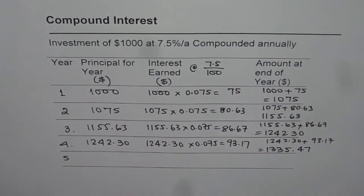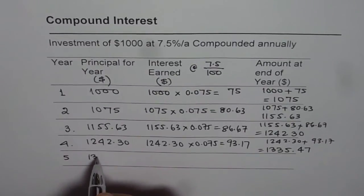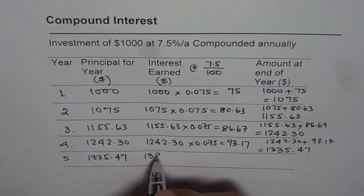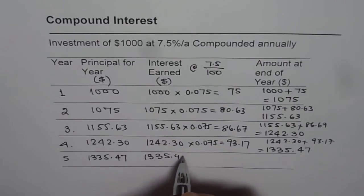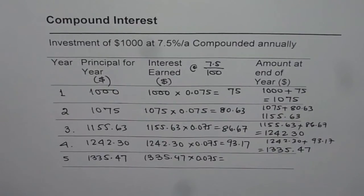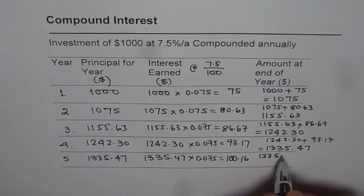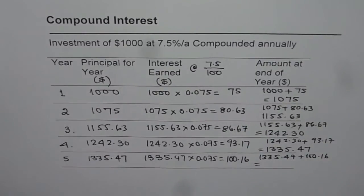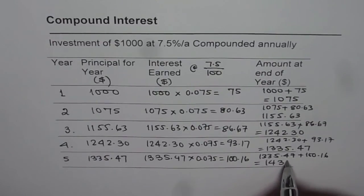In the beginning of the fifth year, the amount which we are going to start with is 1,335.47. The interest will be earned on 1,335.47 times 0.075. Let us see how much it is. Times 0.075 gives us 100.16. This gets added to 1,335.47 plus 100.16. We get the final amount at the end of five years, which is 1,435.63.